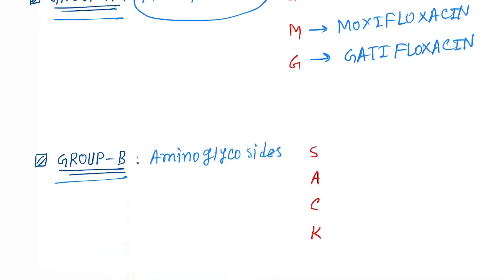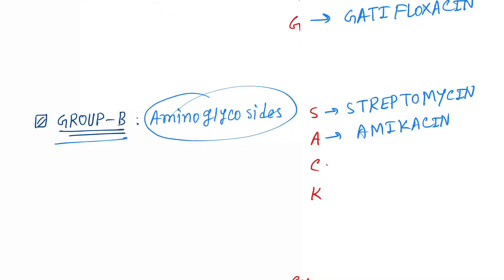Now come to group B. They are aminoglycosides. S for streptomycin, A for amikacin, C for capreomycin, and K for kanamycin.